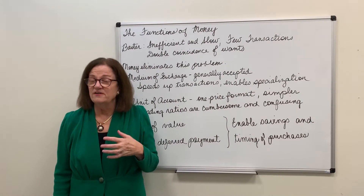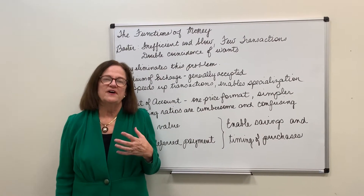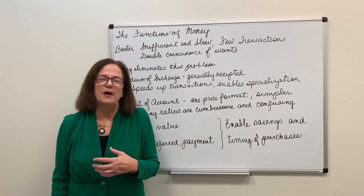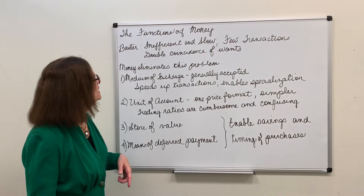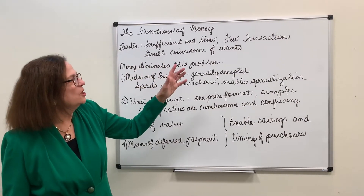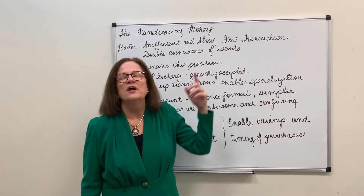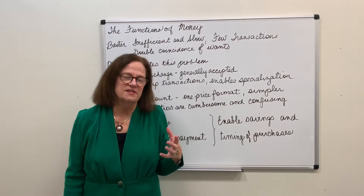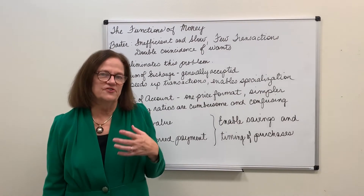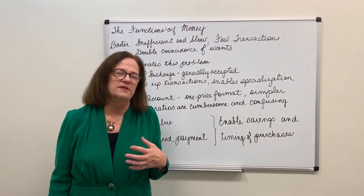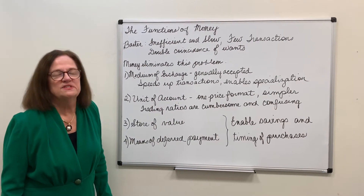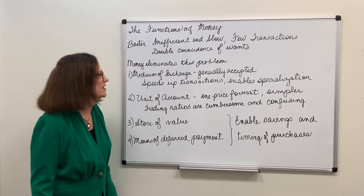In fact, it's very difficult in barter to find somebody who has what you want and wants what you have. Because it's so hard to find someone to trade with, barter is inefficient, slow, and you get few transactions. A lot of people resort to subsistence farming, trying to produce everything they need for themselves, and that's the hallmark of a primitive society — you see that a lot in Sub-Saharan Africa, for example.